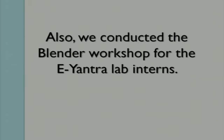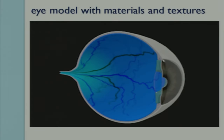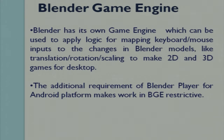That was one of the most interesting learning sessions during this internship. Our project required the 3D model of the human eye, which was created by the Blender experts. This slide shows the eye model without materials and textures. The next slide shows the eye model in Blender after adding materials and textures to give it a realistic view of a 3D human eye. Blender comes with its own game engine, the Blender Game Engine, which is used to create 2D as well as 3D applications, but only for desktop purposes. It does not output an .apk file, so we cannot use that game engine for Android devices.